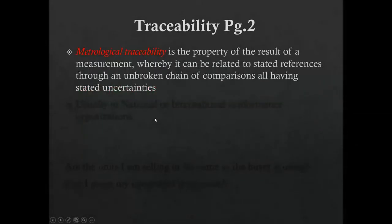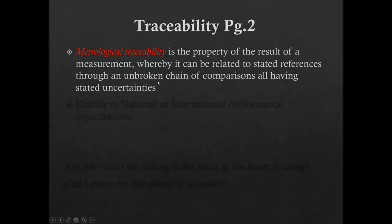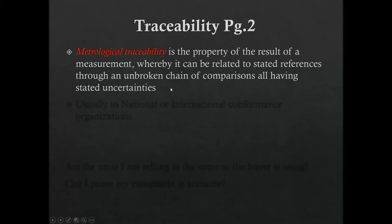What is traceability? Metrological traceability — 'metrological' being a European-style word for instrumentation or measurement — is the property of the result of a measurement whereby it can be related to stated references through an unbroken chain of comparisons, all having stated uncertainty. Basically, traceability is the result of calibration and calibration documentation that tells us how accurate a measurement is, all the way from your level up to some big governing body.